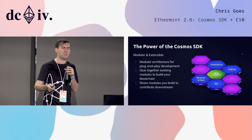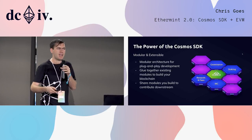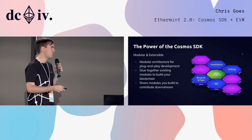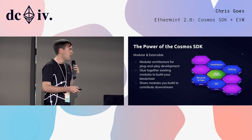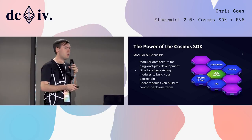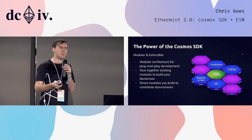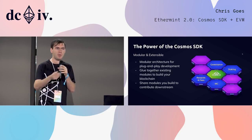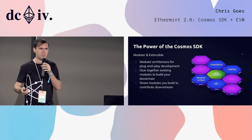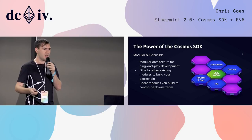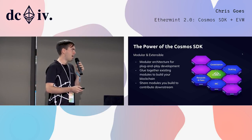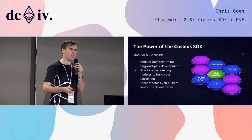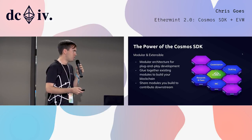They could build a different module for a DEX or a different module for a different kind of proof-of-stake algorithm. Then, using the Cosmos SDK, you can pick and choose which modules you want to use in your blockchain, glue them together, and connect them using the least authority permissioning system to run your state machine.